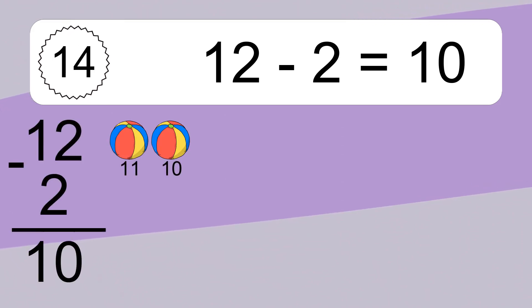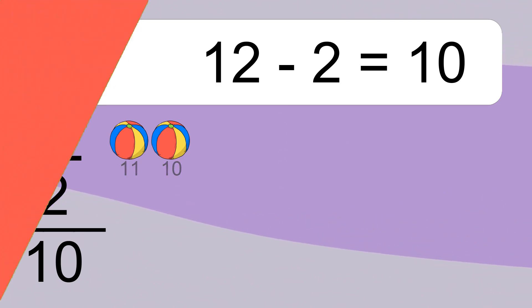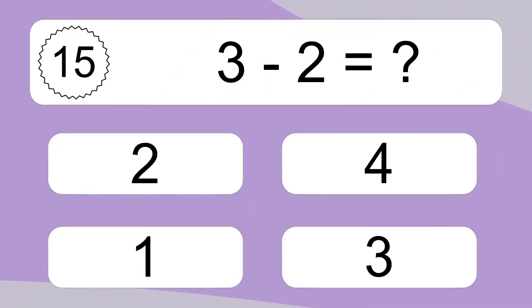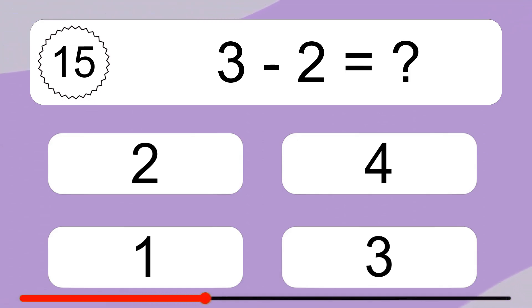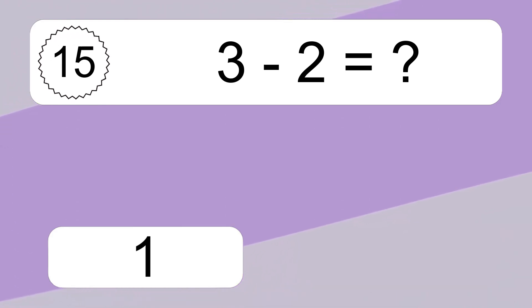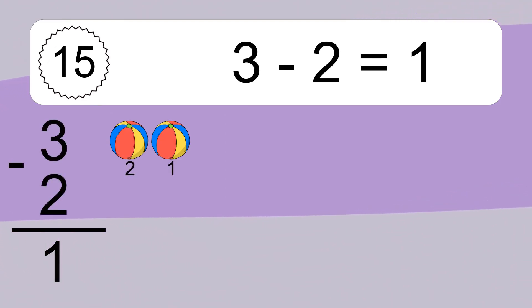12 minus 2 equals what? 12 minus 2 equals 10. Let's count it. 11, 10. 3 minus 2 equals what? 3 minus 2 equals 1. Let's count it. 2, 1.